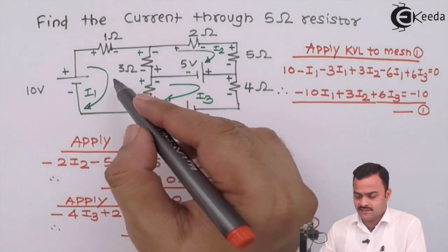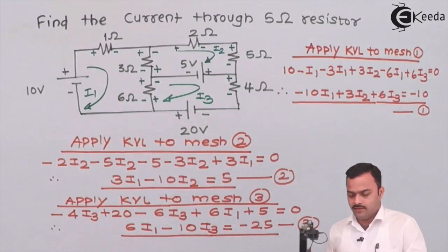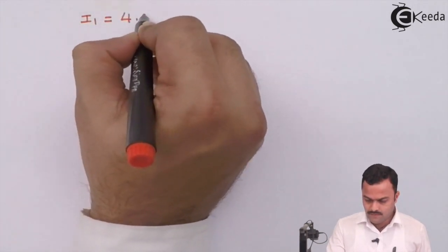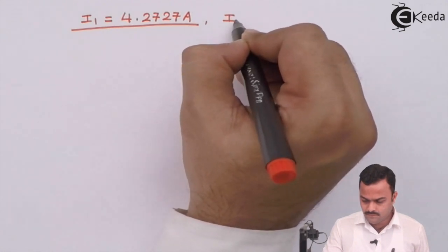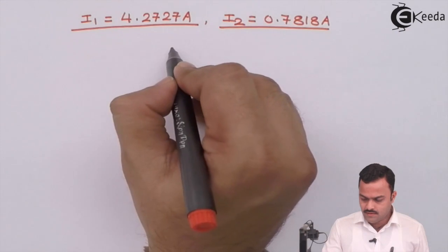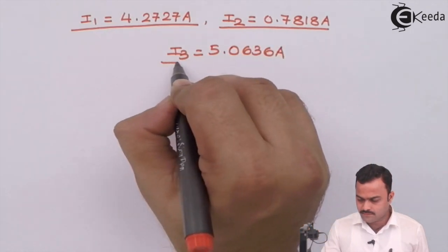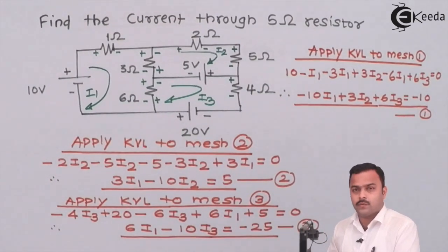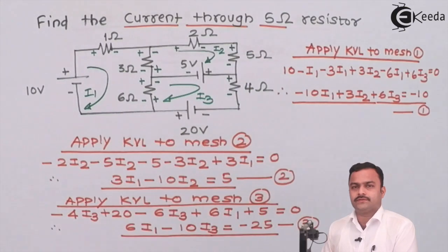We now have three meshes, three equations, and three unknowns — i1, i2, and i3. Solving equations one, two, and three gives: i1 equals minus 4.27 amperes, i2 equals 0.718 amperes, and i3 equals 5.0636 amperes. In the question, they ask for the current through the 5 ohm resistor, and the 5 ohm resistor has i2 flowing through it, so i2 is the current through the 5 ohm resistor.